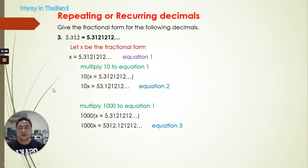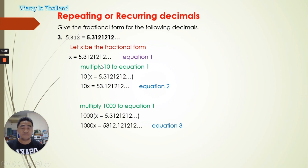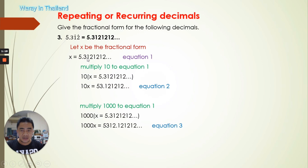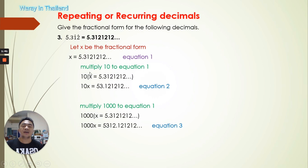Now for our third number: we have 5.312121212... to infinity. The repeating number is 12, 12, 12. You will see the point notation on 1 and 2, indicating 12 is the repeating pattern. Using the same method, let x = 5.31212... — that is equation one. The repeating number is not right after the decimal point, so we need to move the point twice: first to after the tenths, then to after the thousands space. So we multiply by 10 and by 1,000.